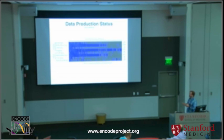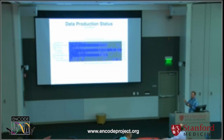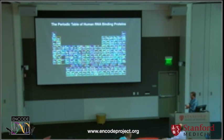Here's a snapshot of where we are to date. We have at least one data set for 344 RNA binding proteins, and about 1,300 data sets that are completed and/or released, in both K562 and HepG2. What we're really working on in the next few months is maximizing the number of assays available for each protein — filling in as many of those squares as we can so we have the same data for every RNA binding protein, and eventually we'll have our periodic table for RNA binding proteins.